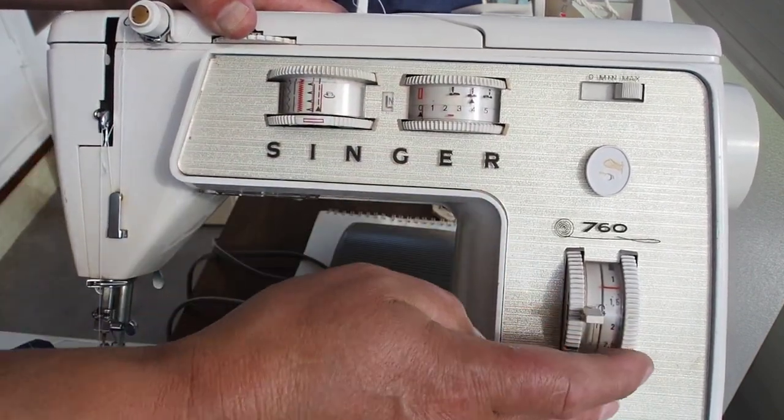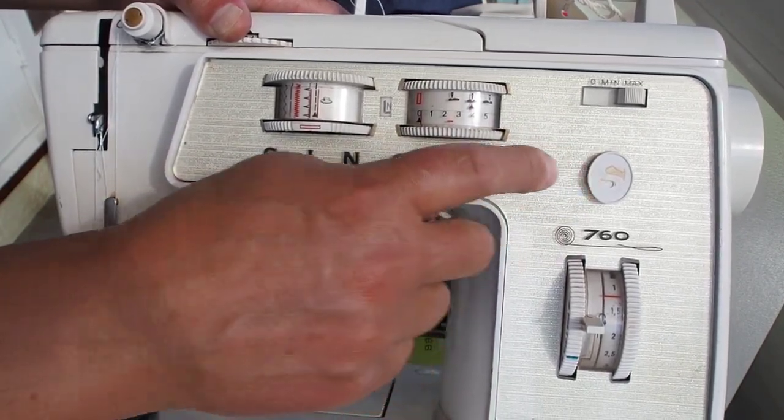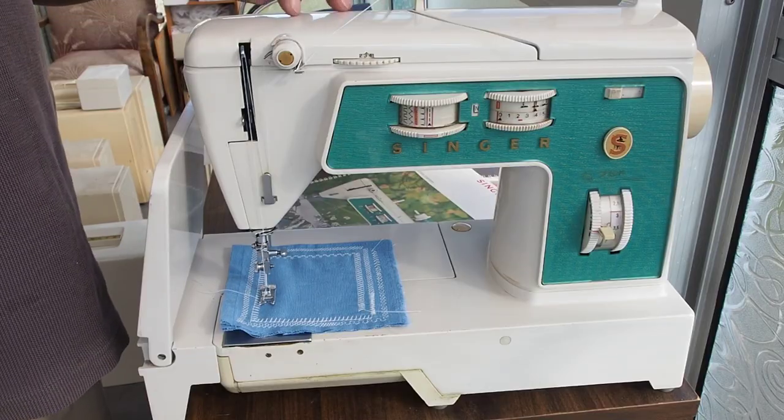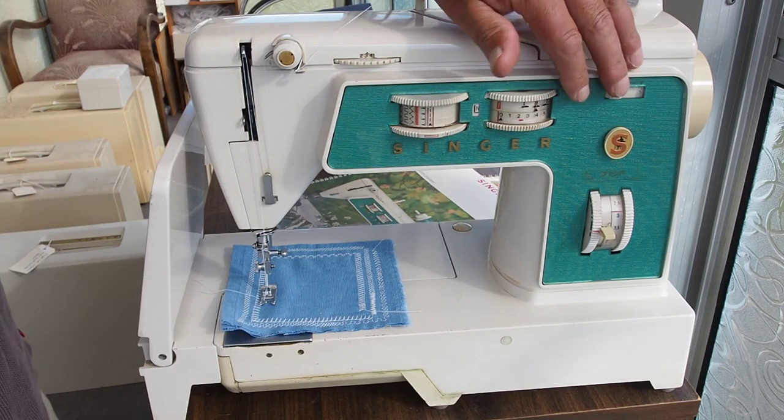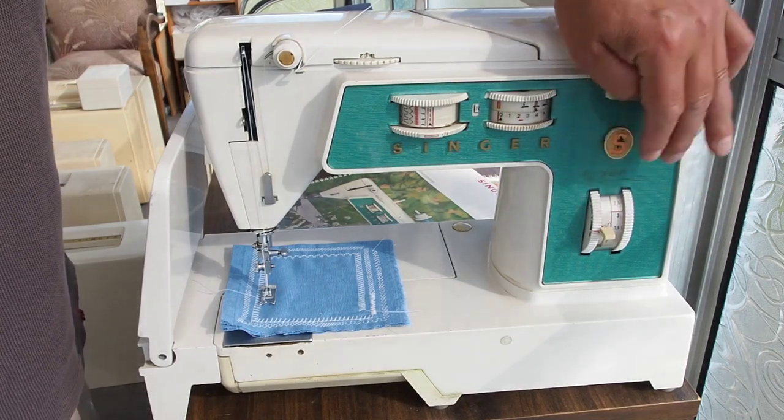Generally on these machines, the touch and sew style machines, all of the controls are the same - pretty much they're all similar. Singer badge is missing off this one. This is probably the more top end of the machines that I've got - the 766.